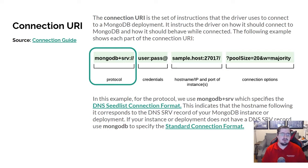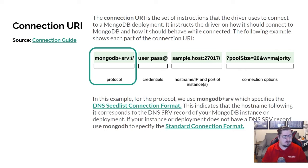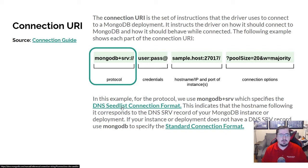The first part you're going to see is the protocol — just like in any normal URI, the protocol is going to be one of two things: mongodb or mongodb+srv. If it's mongodb, it's the standard connection. The other one, mongodb+srv, is the DNS seedless connection format — that's definitely more advanced than what we want to talk about here. We're just going to be using mongodb for this example.